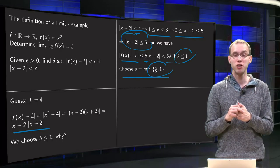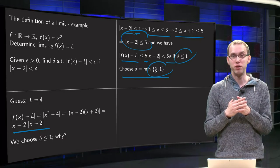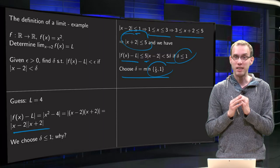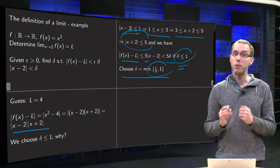So we know for sure that if we choose our delta like this, that our delta will be less or equal than 1, so this condition over there will be satisfied.